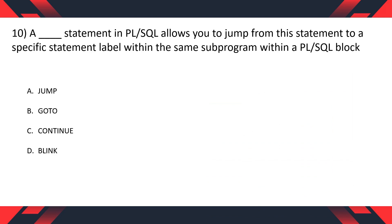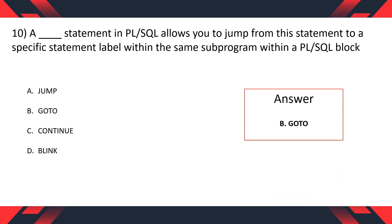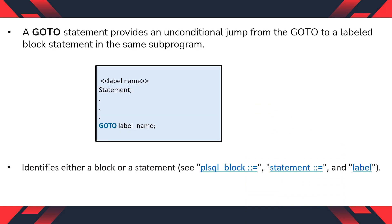Question 10: A statement in PL/SQL that allows you to jump from the statement to a specific labeled statement within the same subprogram in a PL/SQL block. Options: A. Jump, B. GoTo, C. Continue, D. Bulk. The correct option is B, GoTo. A GoTo statement provides an unconditional jump from the GoTo to a labeled block statement in the same subprogram. After the GoTo keyword, the label name is mentioned, and the statement will jump to that labeled statement.